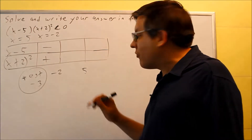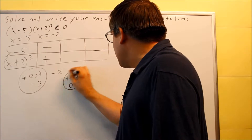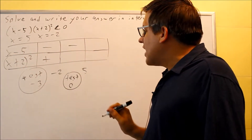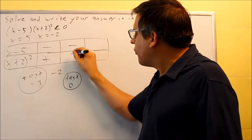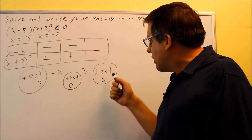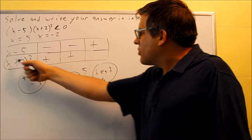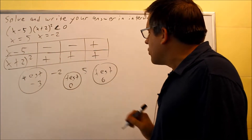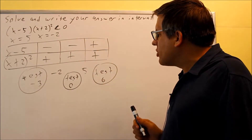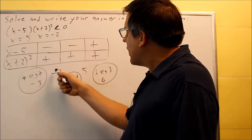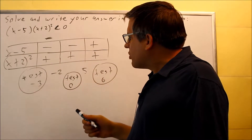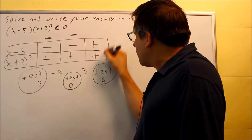Next I test a number between negative 2 and 5 — I'll use 0 because it's easy. Zero into x minus 5 is negative. Zero plus 2 is 2, squared is 4, which is positive. Now testing a number greater than 5, I'll use 6. Six minus 5 is positive. Six plus 2 is 8, squared is still positive. So the table is now complete.